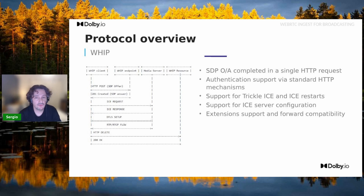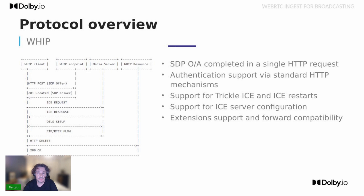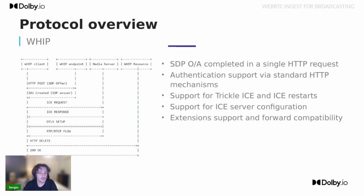The WHIP protocol itself started as kind of a Twitter joke about what would be the minimum viable signaling protocol for WebRTC. It turned out it was indeed possible to complete the full SDP offer/answer in a single HTTP request, and reuse standard HTTP mechanics to provide most requested features like authentication and load balancing. From the user perspective, you only need to know and configure the URL of the WHIP endpoint and obtain an authentication token.